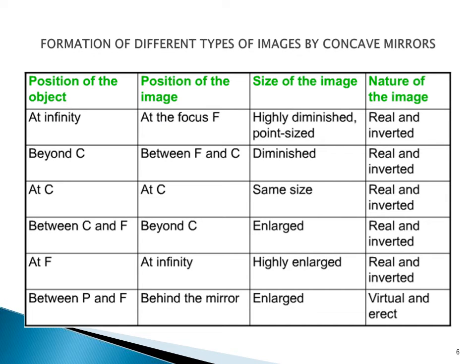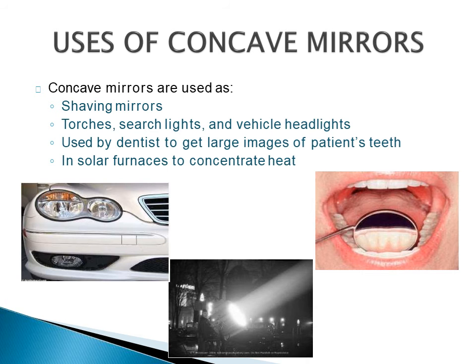These are the different positions and the nature and size of the image as we have discussed. Now let's talk about the uses of concave mirrors. They are used as shaving mirrors, in torches, search lights, and vehicle headlights. They are also used by dentists to get a large image of a patient's teeth, and they are used as solar furnaces to concentrate heat.